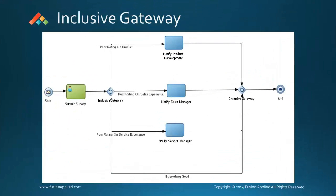Let's look at inclusive gateways now. Unlike an exclusive gateway where the process can get forked into one of several paths, the inclusive gateway can split the process into more than one path.